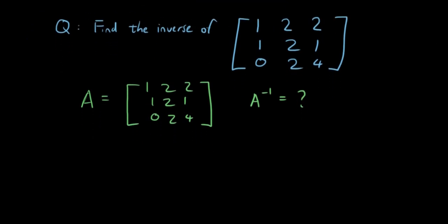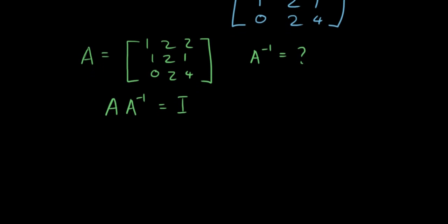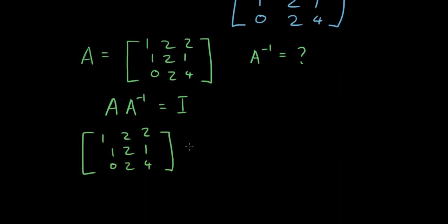Now what is the point of the inverse of A? Well, we know that when matrix A is multiplied by its inverse, we will get the identity matrix. So if we write this out, we have matrix A multiplied by the inverse of A will equal the identity matrix.